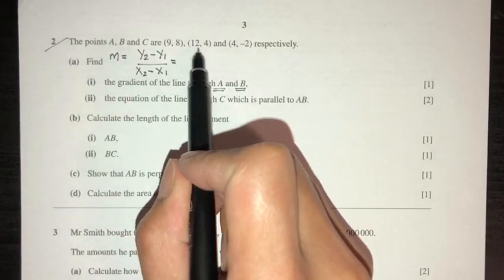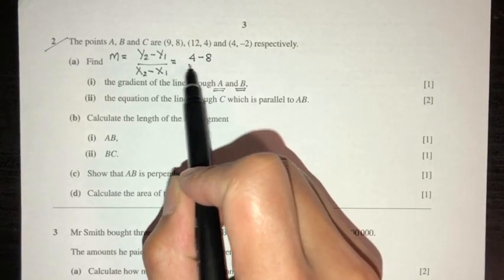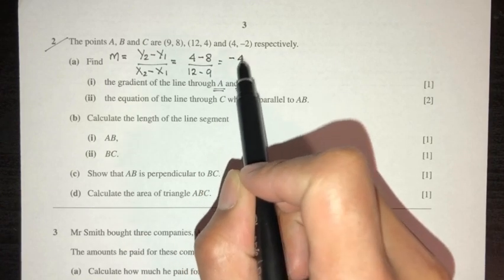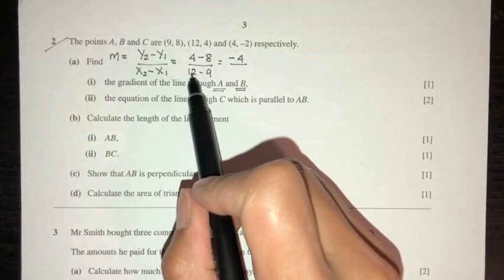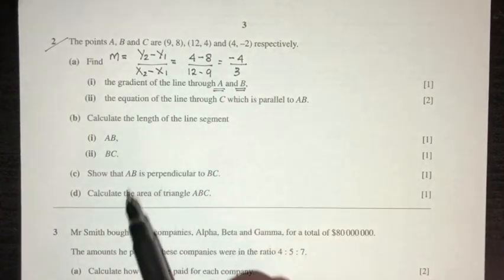which is y2 minus y1 over x2 minus x1. So A, B is these two points, so y2, 4 minus 8, over 12 minus 9, that should be minus 4 over, so 12 minus 9 is 3. So that is your gradient for part one, minus 4 over 3.